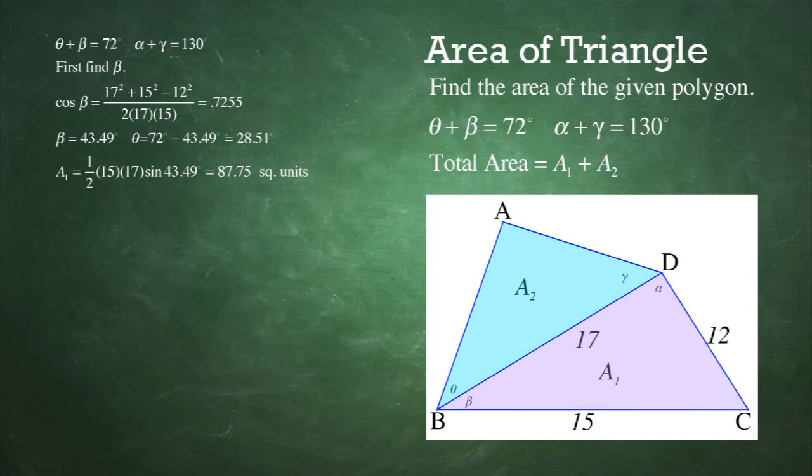So once we have found angle beta, then we can find the area of triangle BCD. It's simply 15 times 17 times one-half times the sine of angle beta, which we just found. So A1 is equal to one-half times 15 times 17 times the sine of 43.49 equals 87.75 square units.